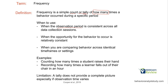We also want the opportunity for behavior to occur to be constant. Behaviors that occur infrequently — you might want to avoid using just frequency. You can use frequency when you're comparing behaviors across identical timeframes or settings. In other words, use frequency when things are very uniform: the observation times are the same, behavior tends to happen at the same time every day, you're comparing behavior across identical settings. You want everything to be very uniform if you're going to use frequency.